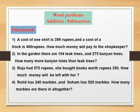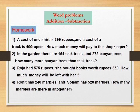Homework — Swadhyay: solve these word problems in your notebook. खालील शाब्दिक उदाहरणे तुमच्या वहीमध्ये सोडवा. Problem 1: The cost of one shirt is Rs. 399 and the cost of a frock is Rs. 400. How much money will you pay to the shopkeeper? Problem 2: In the garden, there are 154 teak trees and 275 banyan trees. How many more banyan trees are there than teak trees?